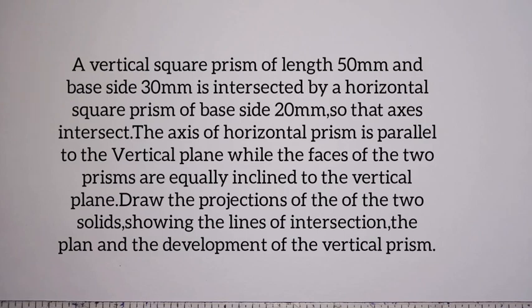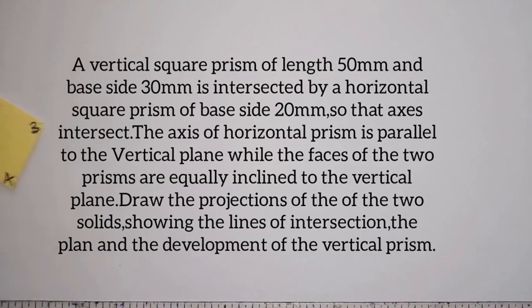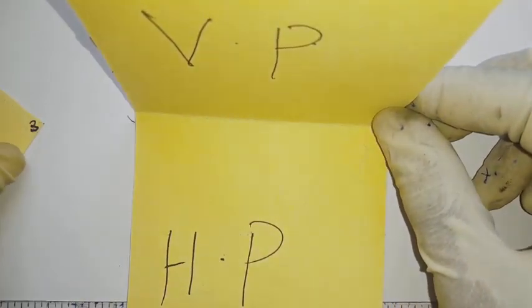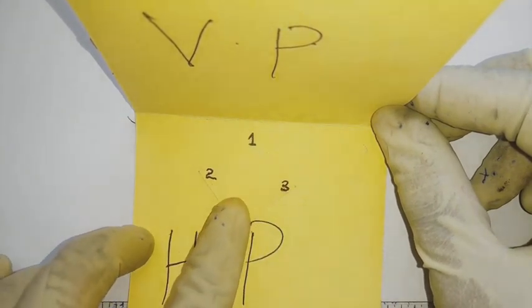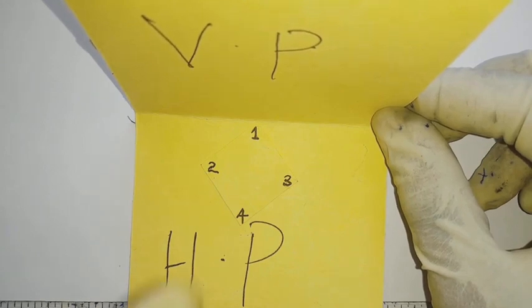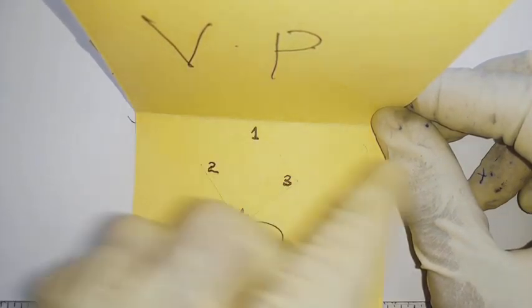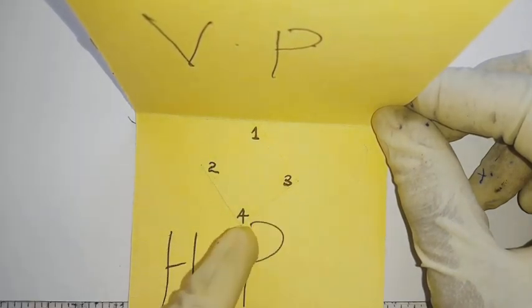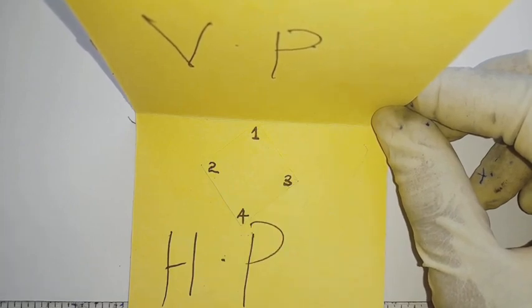There are points we need to note. First, the axes of the two prisms are joined perpendicularly. We have been informed that the axis of the horizontal prism is parallel to the VP, and the faces are inclined to the VP for both the adjoining prism and the vertical one. Using an illustration with a horizontal plane and vertical plane, we place our prism such that the square base sides are all inclined to the vertical plane.